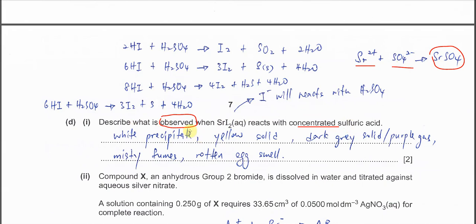When the acid reacts with the iodide it forms HI. The HI will further react with the concentrated acid to form all these compounds. It forms iodine, which will give a dark gray solid or purple gas.